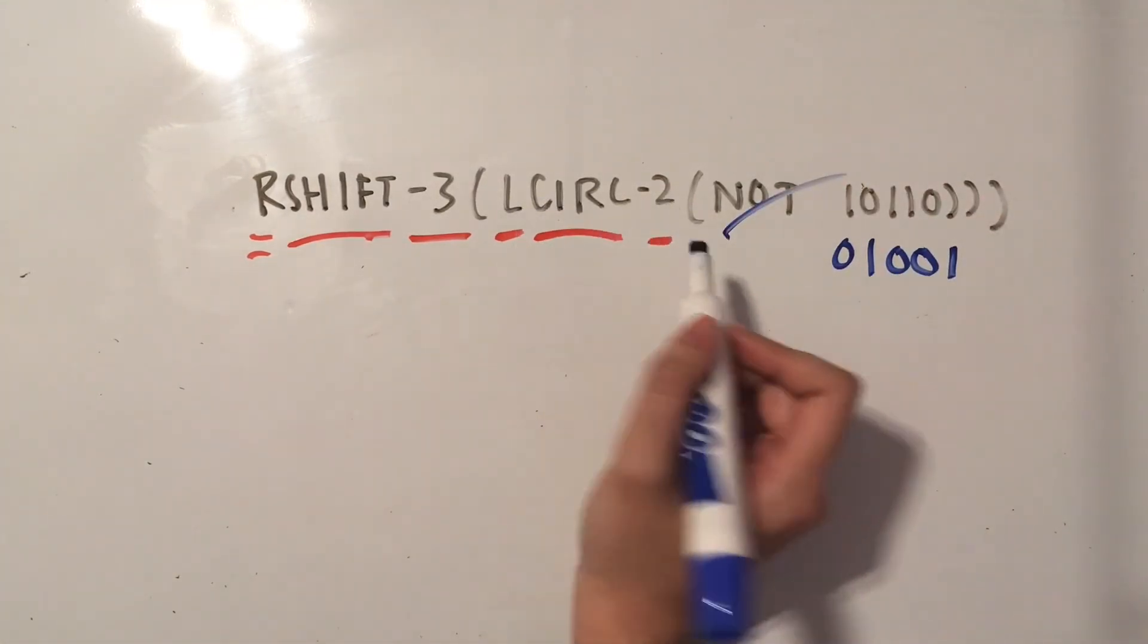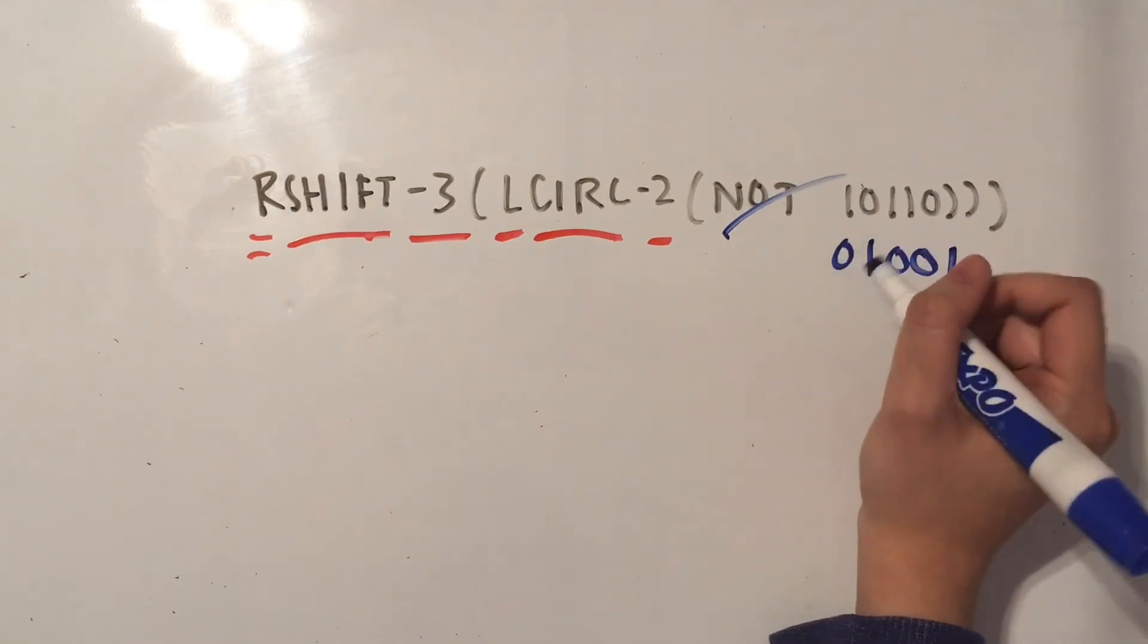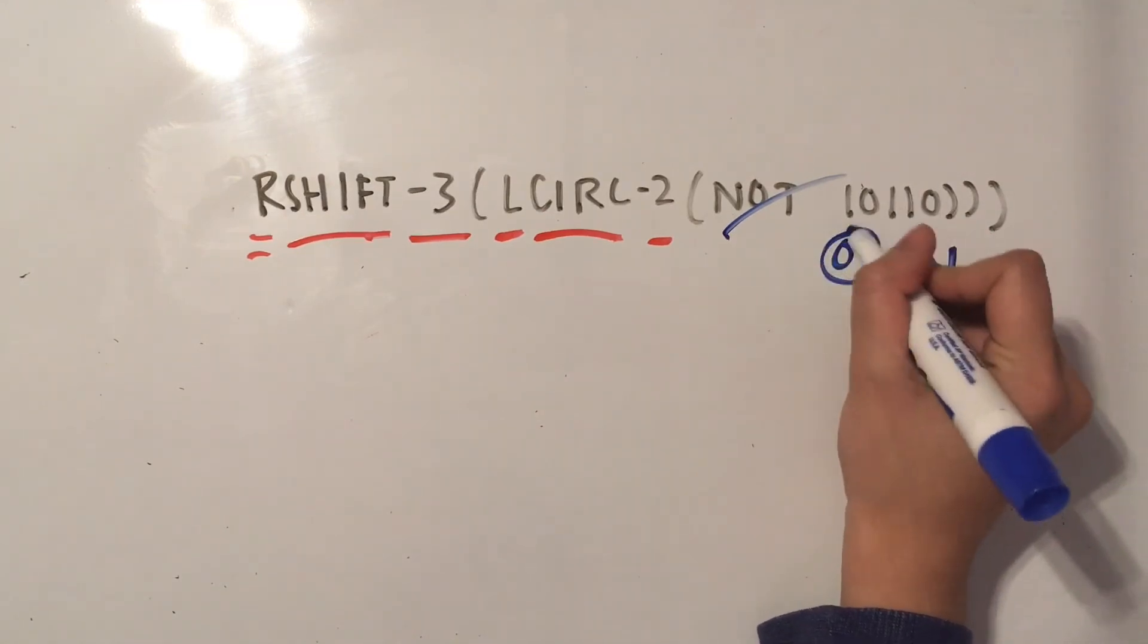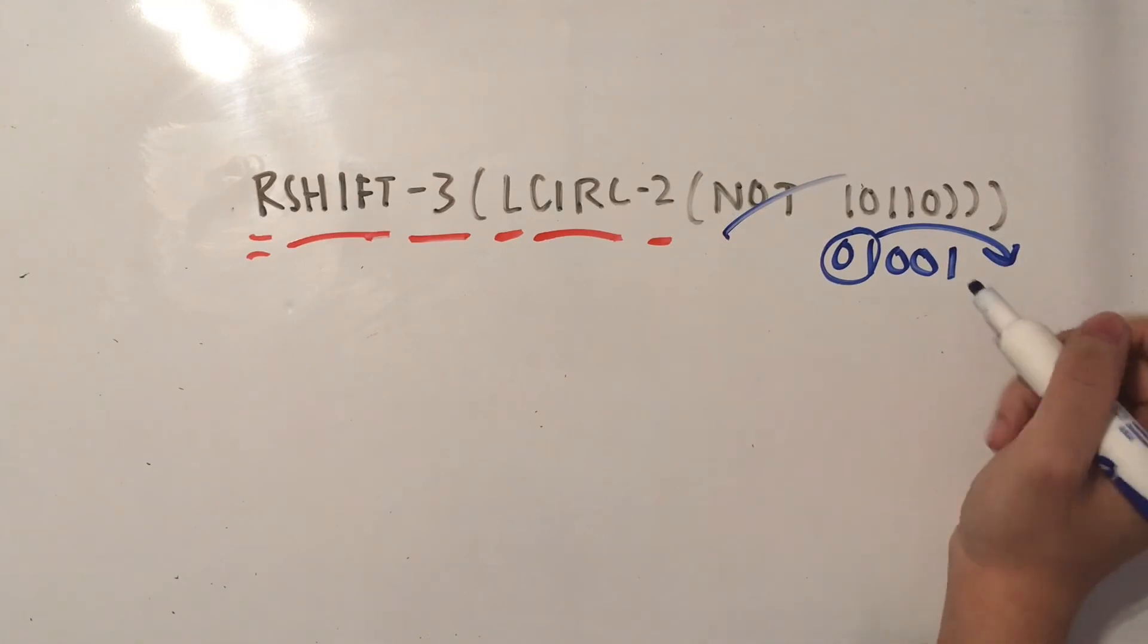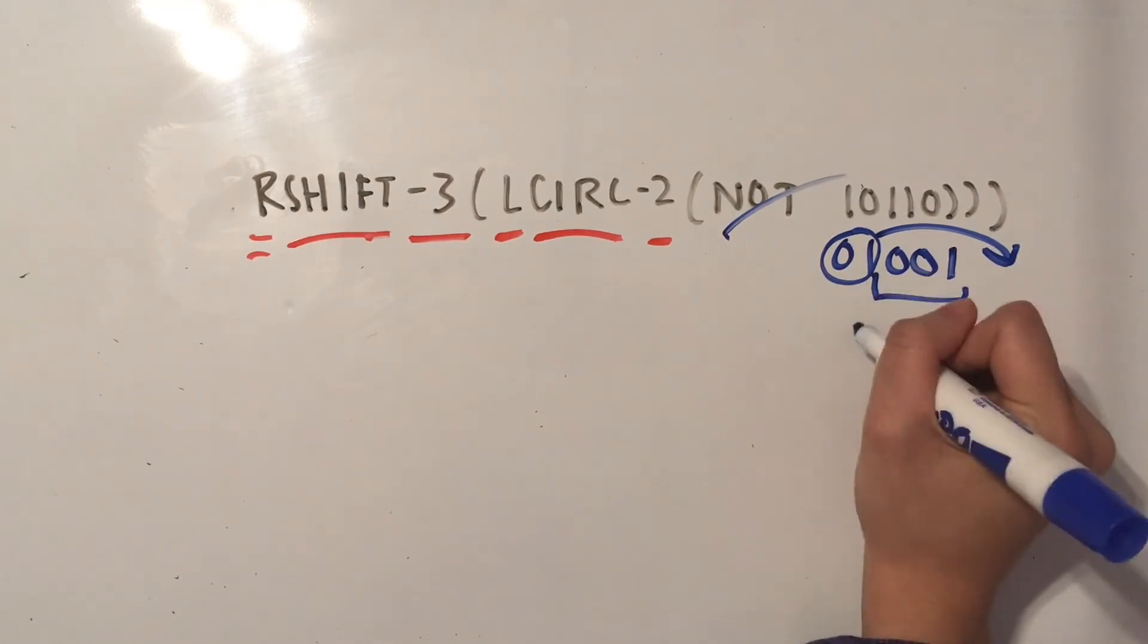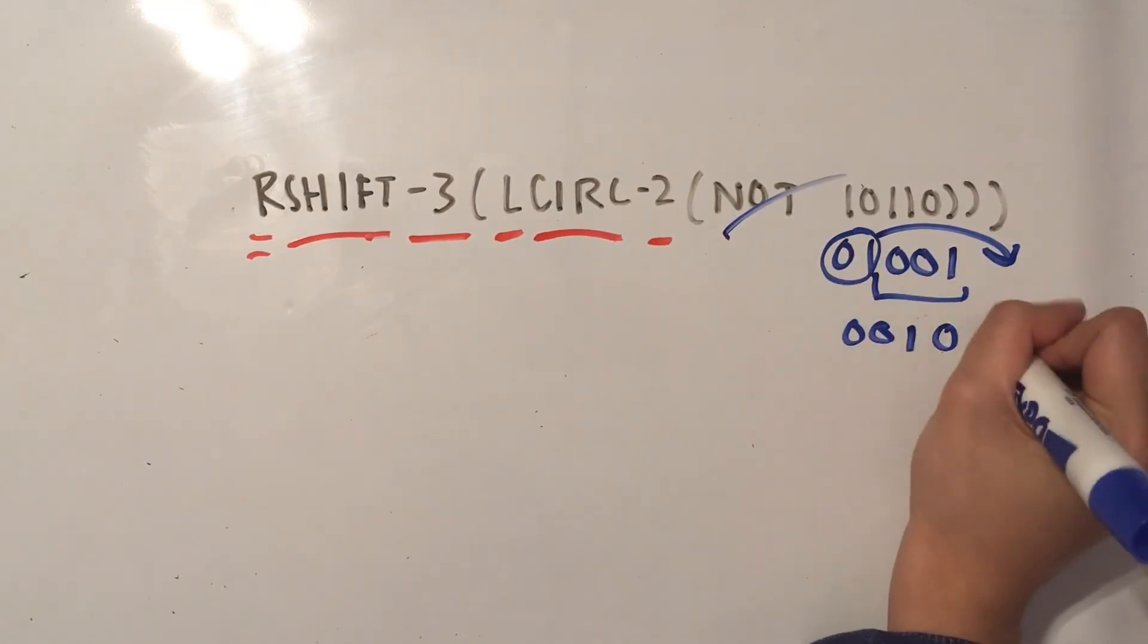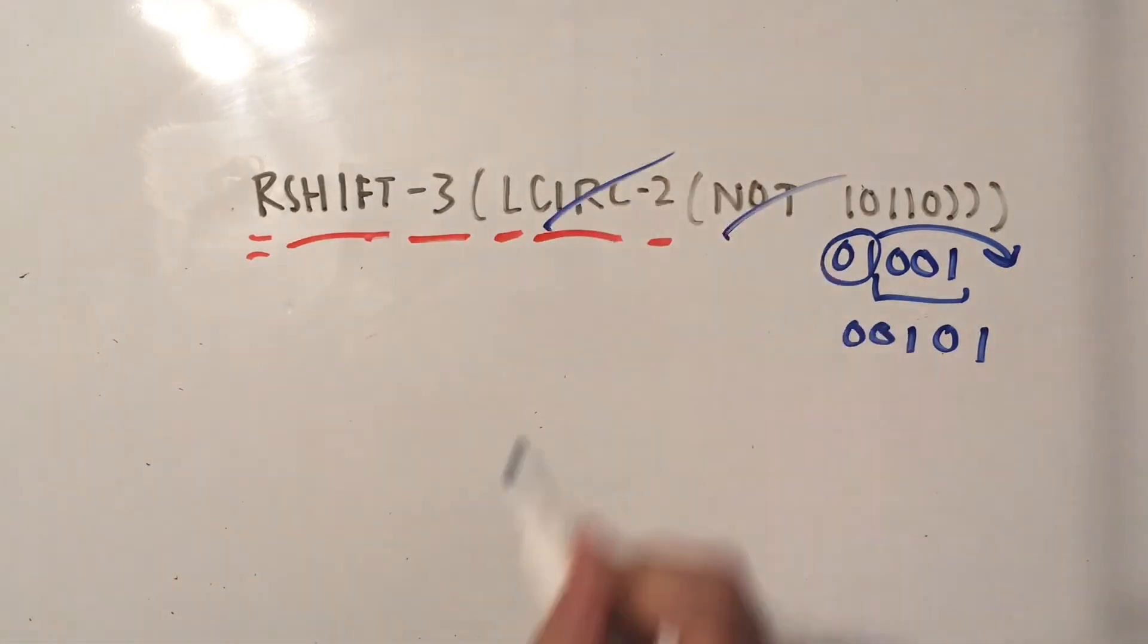Now we have to L circ 2. So we start from the leftmost side and we take the first 2. Then we circle it over to the right. So now we have 001, and then we circled the 0 and 1 over. So this is done.